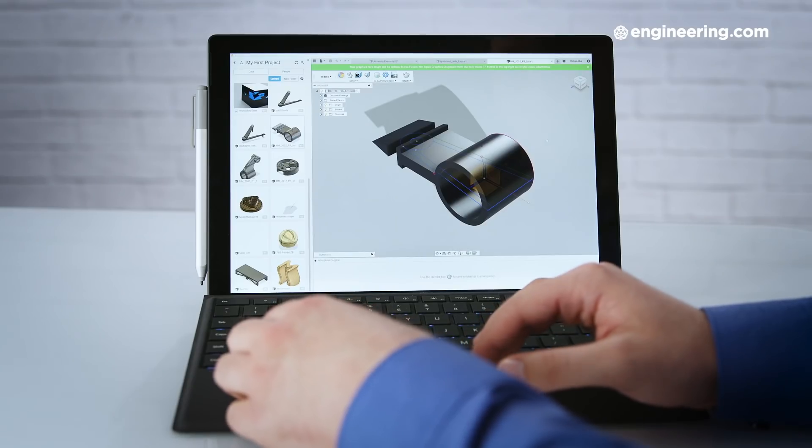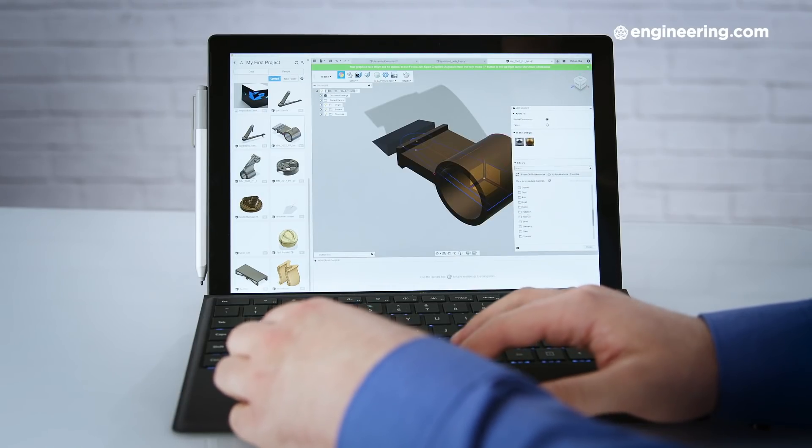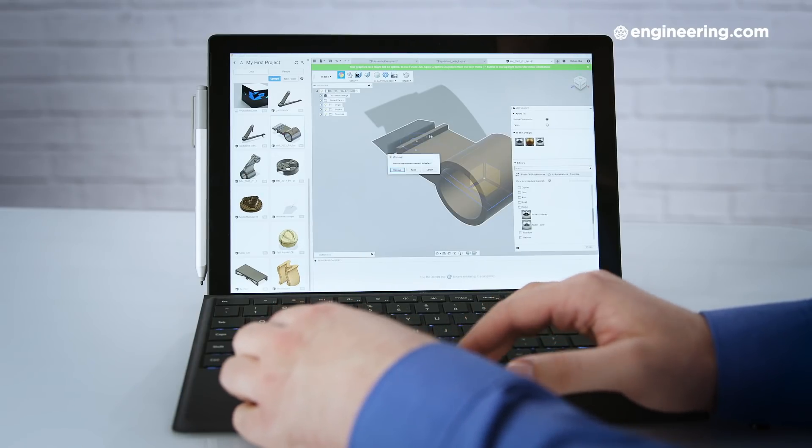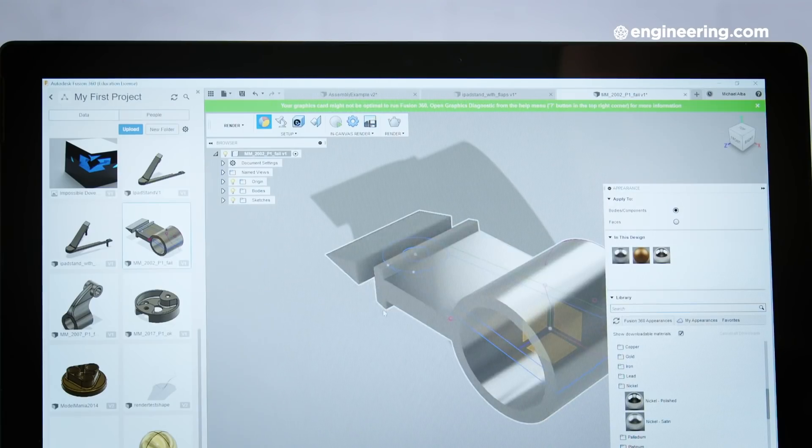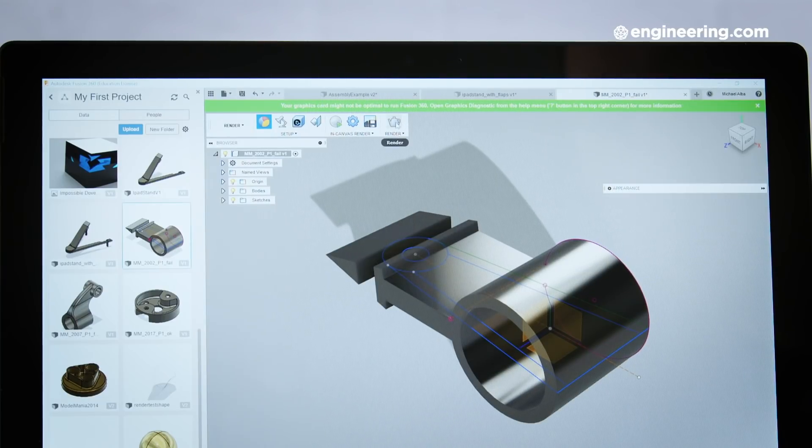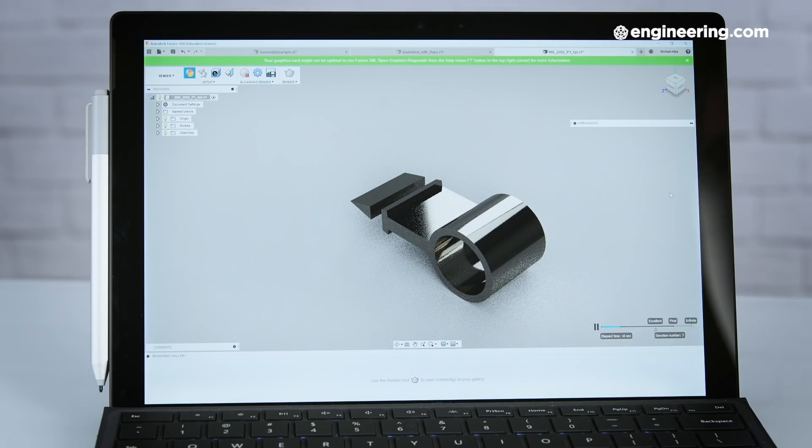Let's talk about the performance of the Surface Pro 6. You're not going to get workstation-level performance out of this device. The lack of a discrete GPU really holds the SP6 back in graphics-heavy applications. For example, when I was playing around in Fusion 360, I immediately got the message, your graphics card might not be optimal to run Fusion 360. But that's not to say it can't. You'll still be able to do some light modeling or even rendering on the SP6. But the heavier your workload, the more you're going to notice those performance limitations.